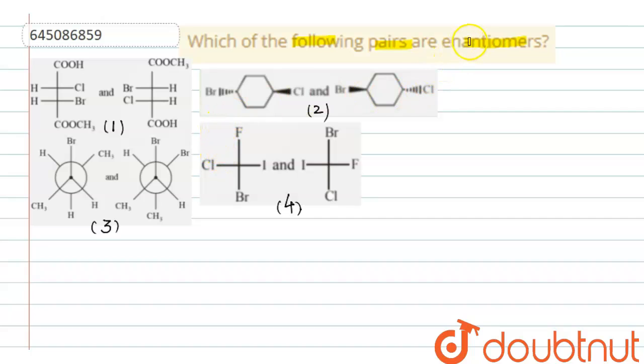Now you know enantiomeric pair means what? One compound must be the mirror image of the other. Two optically active isomers, if they have object-image relationship, then we will say they are enantiomers. Now let us see which one has such a relationship.